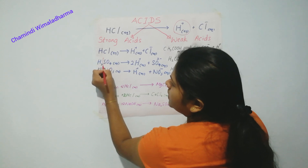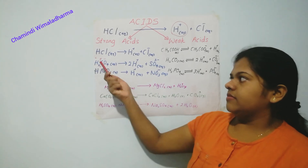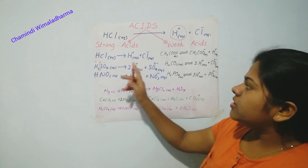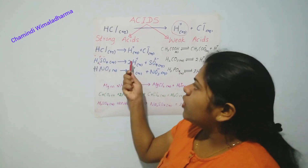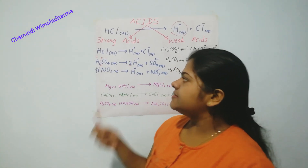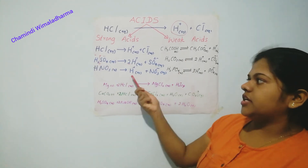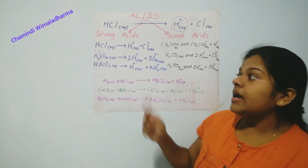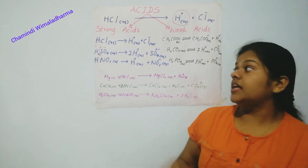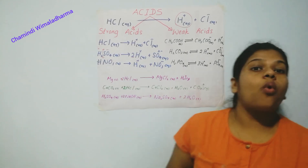This dissociates into a positive part and a negative part. When we write an equation, it should be balanced. As there are two hydrogens in H2SO4, we have to put two in front of H+. Another strong acid is Nitric Acid, HNO3. HNO3 also dissociates into H+ and NO3-. Always remember, when you are writing an equation, the aqueous state should be mentioned. So those main three acids we call them strong acids.